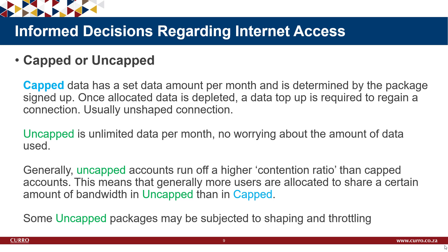Think of the contention ratio like a road: the more cars on the road, the longer it could take to reach your destination. Uncapped means unlimited data but you're on a busier road with more traffic. Capped is like a toll road — bigger, better-maintained roads but you pay your toll fees and have a specific set amount of data to use. Some uncapped packages may also be subject to shaping and throttling.